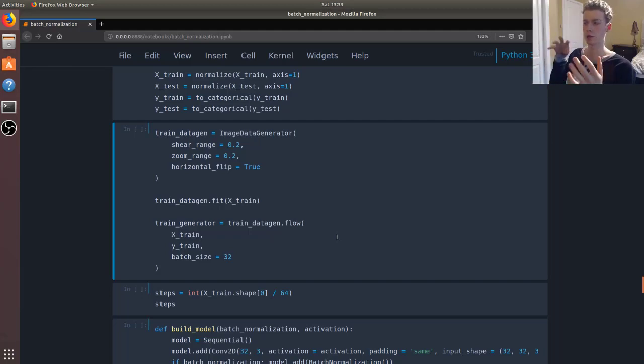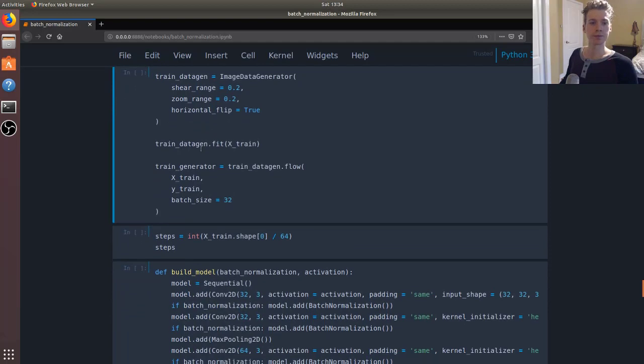We have the zoom range, so it's going to zoom in or out of the image. We also have the horizontal flip. This will force our model to learn the underlying patterns of an image as opposed to just memorizing the image itself.